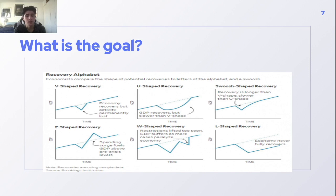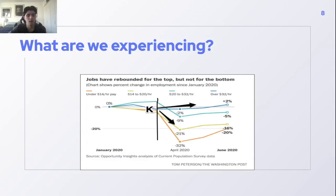The L-shape is the least desirable, as the economy never fully recovers and stays below trend for an extended period. The Fed tries to achieve a V-shape. However, we're arguing that what we're experiencing more today is a K-shape.